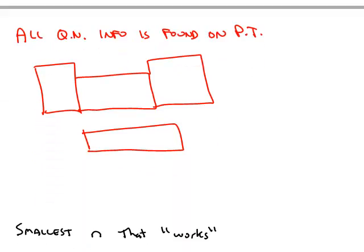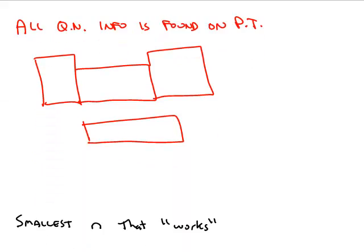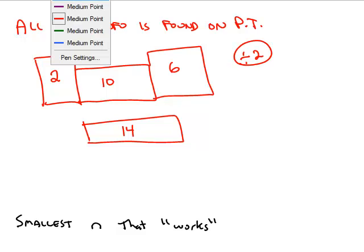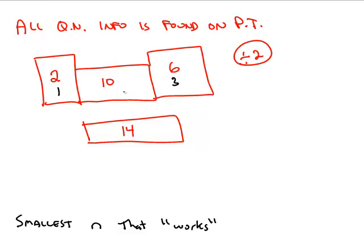Fortunately, everything you need to know about quantum numbers is found on the periodic table itself. If you look at the periodic table, the far left rectangle is made up of two columns. The middle rectangle has ten, this rectangle has six, and these rectangles at the bottom have fourteen columns. If you take those numbers and divide them by two, you get one, three, five, and seven.